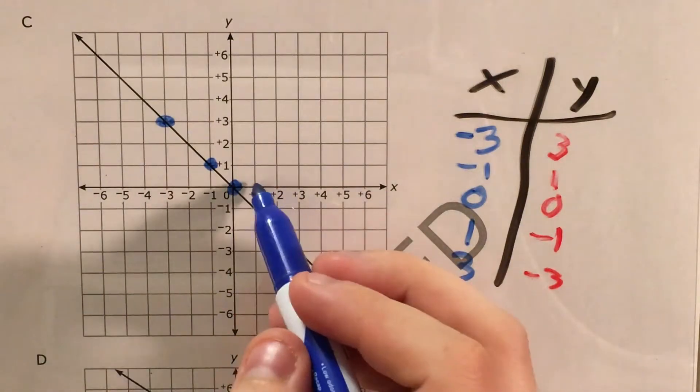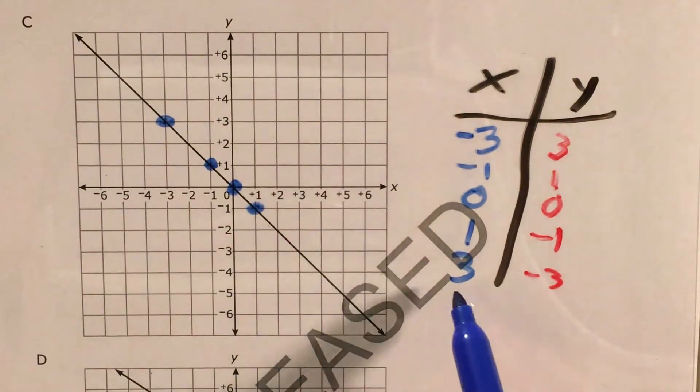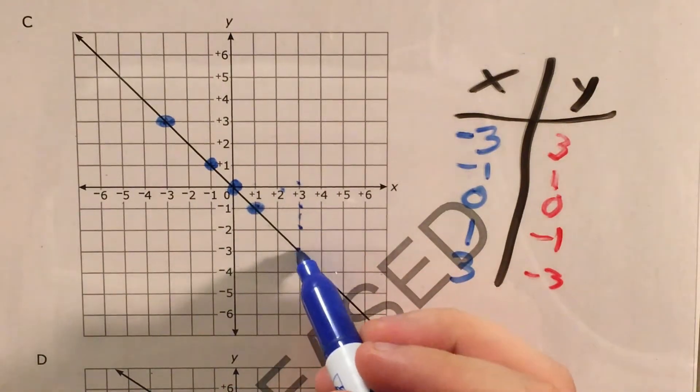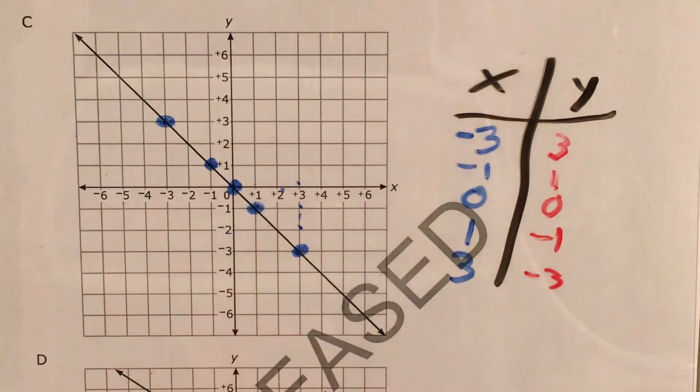Right 1, down 1. Right down puts me here. Right 3 and down 3. Right 2, 3. Down 2, 3. Okay, all five of these points are on the line. I'm going to go ahead and make sure it can't be choice D before I call it that our answer is C.